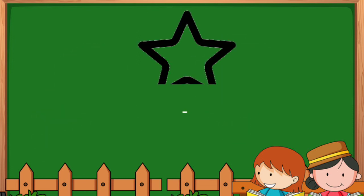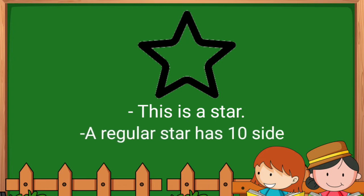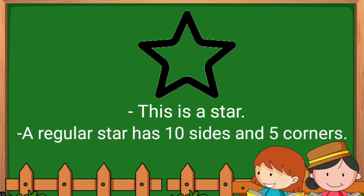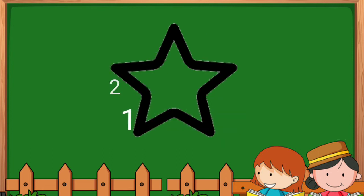Star. This is a star. A regular star has 10 sides and 5 corners. Let's count: one, two, three, four, five, six, seven, eight, nine, ten - ten sides.